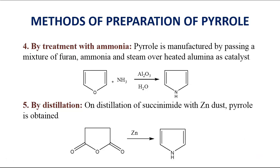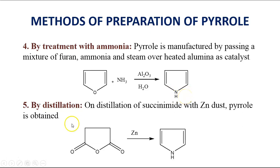The fourth method is by treatment with ammonia. Pyrrole can be manufactured by passing a mixture of furan with ammonia and steam over red-hot alumina as a catalyst, yielding the Pyrrole structure. The fifth method is by distillation — on distillation of succinamide with zinc dust, Pyrrole can be obtained.